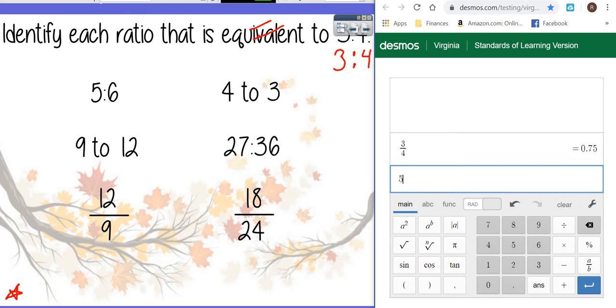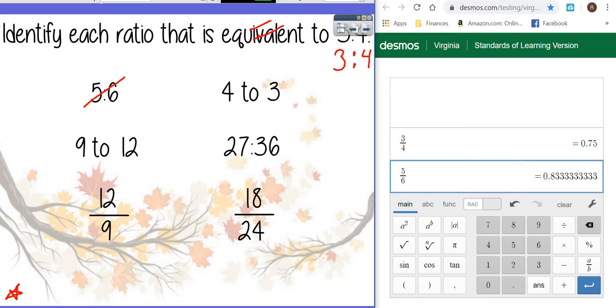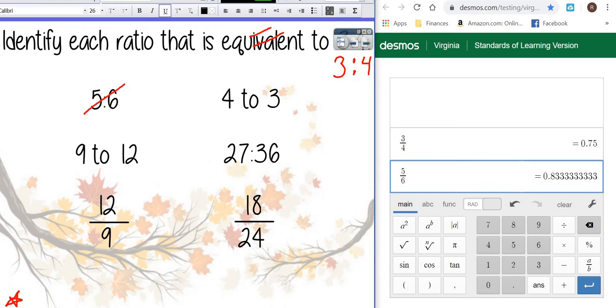So I'm going to check the first one. Five divided by six does not match the three over four. So that is not equivalent. Let's go ahead and try the next one.